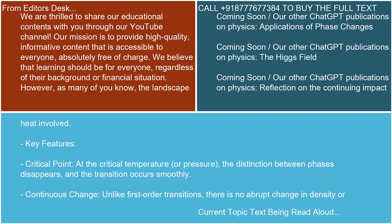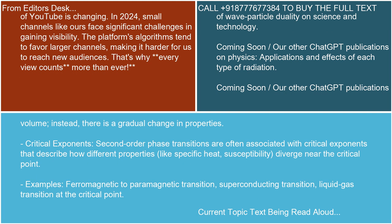Key features. Critical point: At the critical temperature or pressure, the distinction between phases disappears, and the transition occurs smoothly. Continuous change: Unlike first-order transitions, there is no abrupt change in density or volume; instead, there is a gradual change in properties.